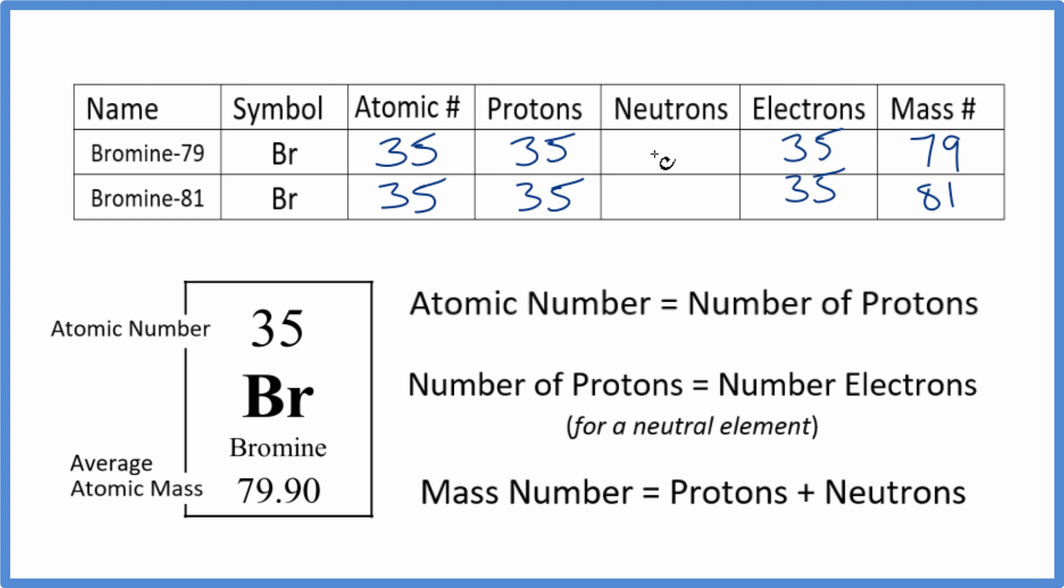35 plus 44 gives us 79. Another way to do it: take the mass number 81 minus 35, which gives us 46 neutrons for bromine-81.